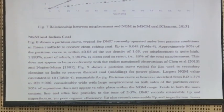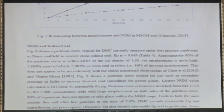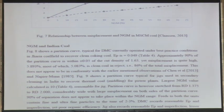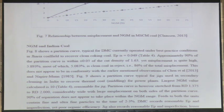Figure 8, from a Tata Steel plant, shows we got an EP of 0.049, and approximately 90 percent of the partition curve is within plus or minus 0.05 of the cut density, which is 1.63. But misplacement is high — 5.893 percent total misplacement calculated, of which 5.083 percent is clean coal in reject, with only a small fraction of reject going to clean coal.